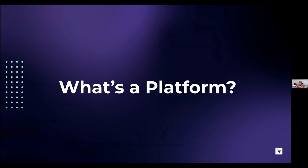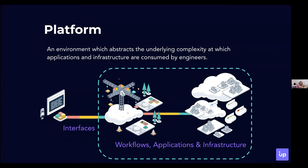Let's get into the meat of this presentation. I always start off by laying down the basics. In this case, we're going to talk about a platform before we jump into the specifics of an AI platform. So, what's a platform? A platform is an environment that abstracts the underlying complexity at which applications and infrastructure are consumed by your engineers. Platform is an overloaded word these days, which is why I'm very intentional with my definition. Basically, the platform is the thing that engineers use at your company to get work done on a day-to-day basis. Generally, you will have some interfaces into that platform — those can be APIs, CLIs, or web user interfaces.